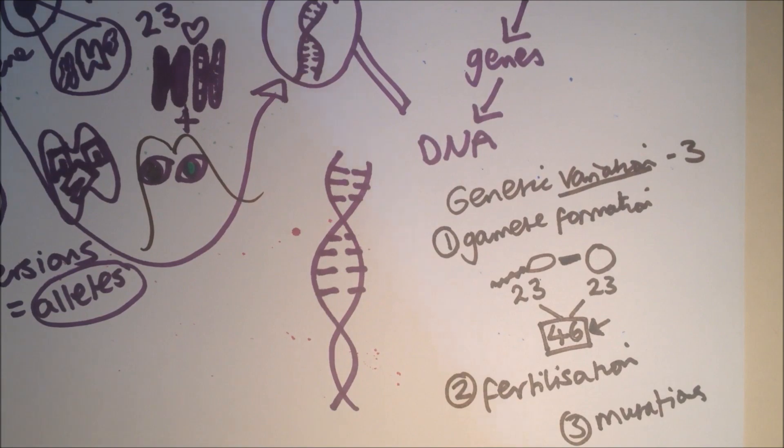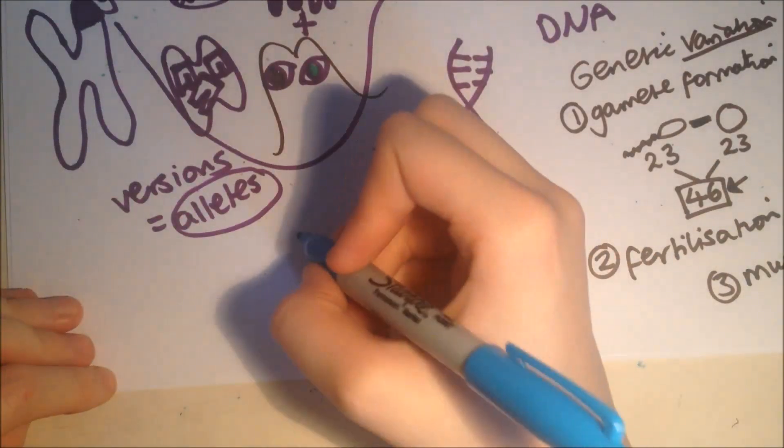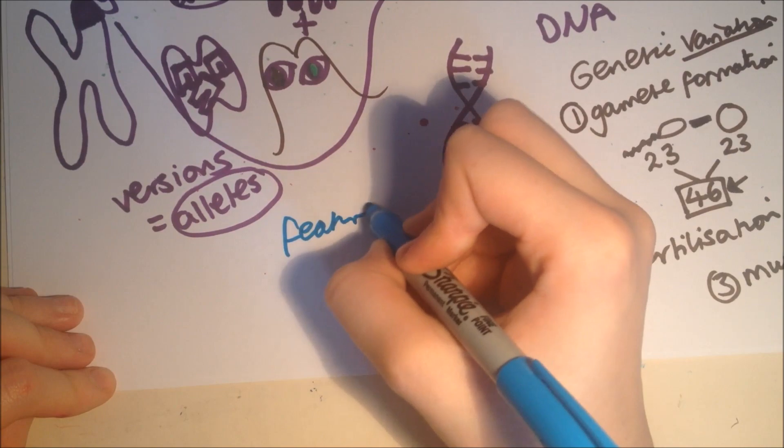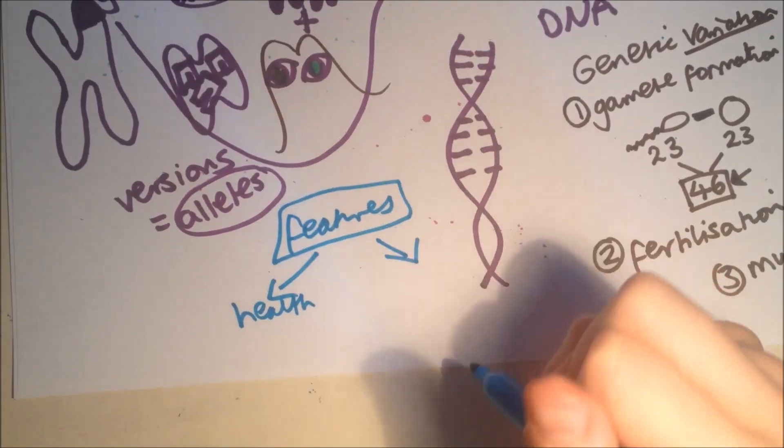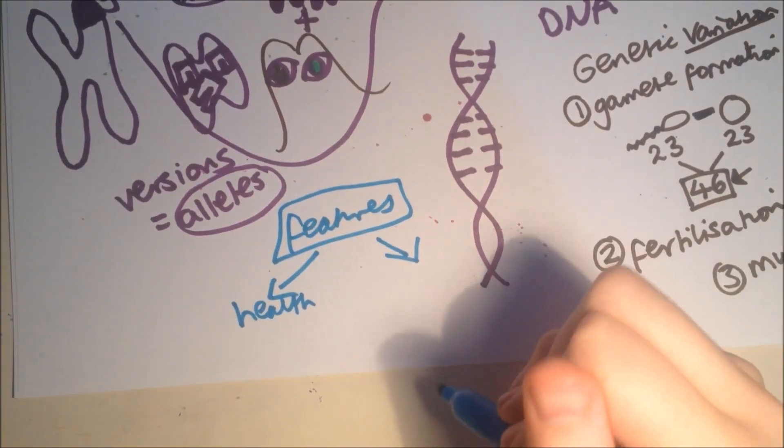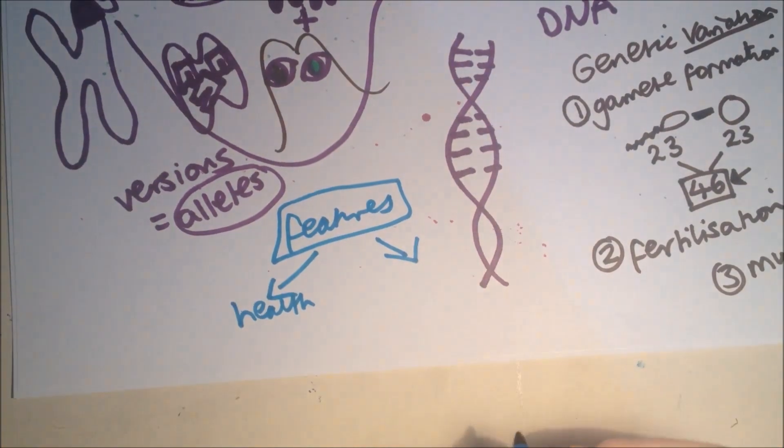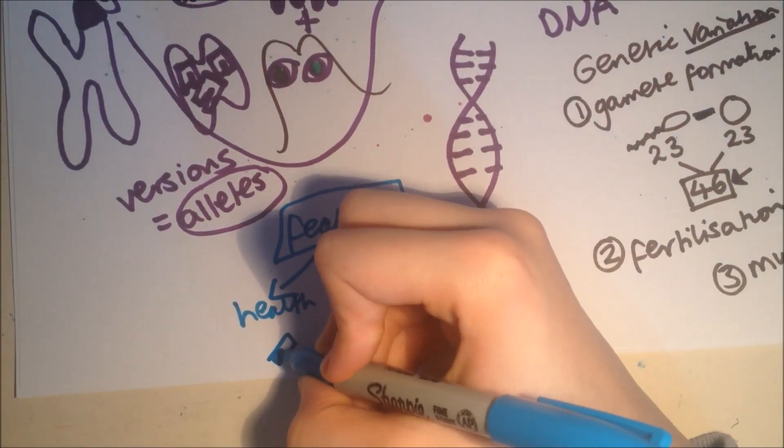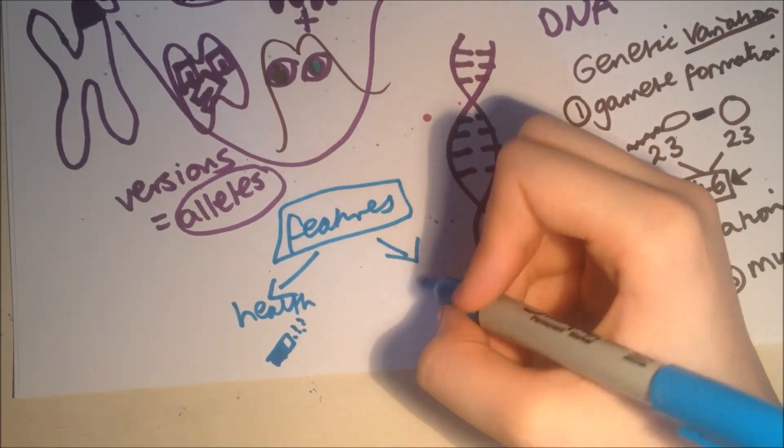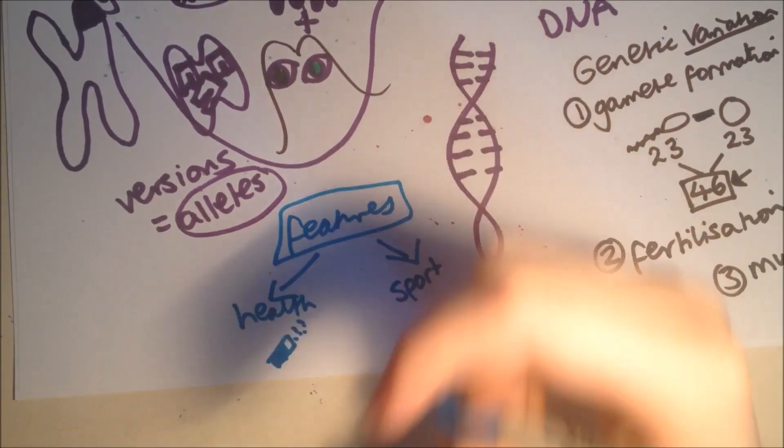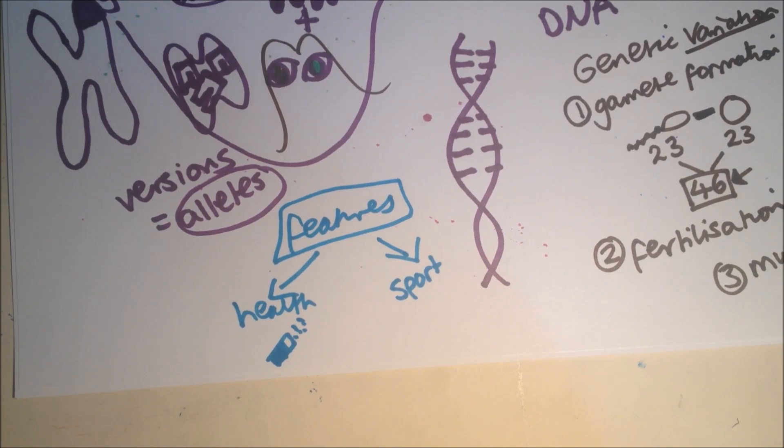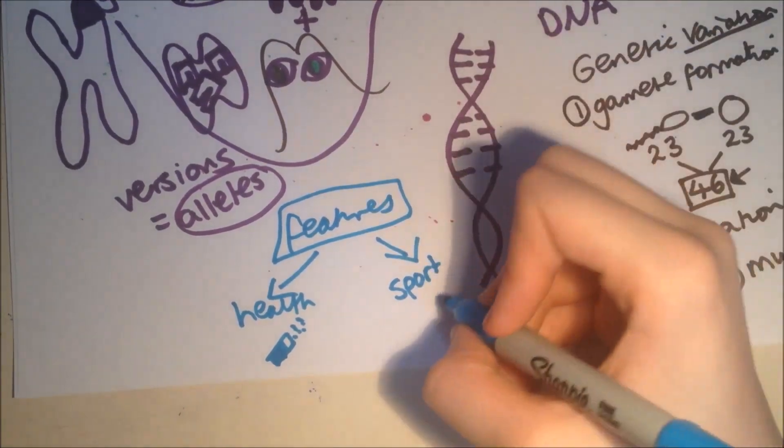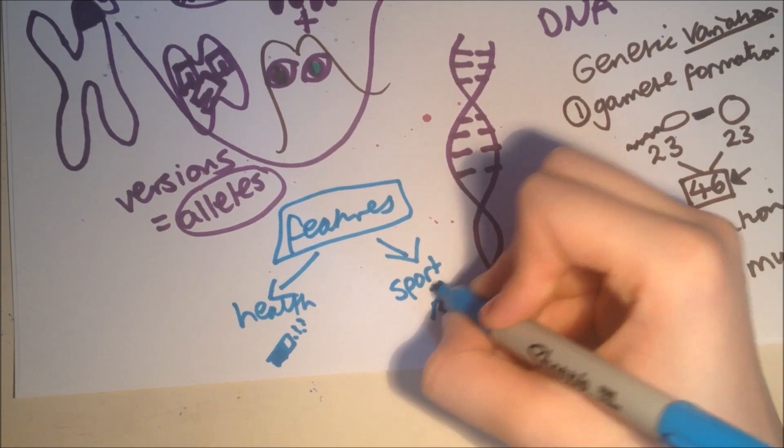Different features are determined by both your genes and the environment you've been brought up in. For example, health. Some people are more likely to get certain diseases because of their genes, but their lifestyle also affects the risks. For example, if you smoke or only eat junk food. Another one is sporting ability. The genes are what makes you sporty, but it can also be due to your upbringing in your environment that causes you to have a better ability at sport.